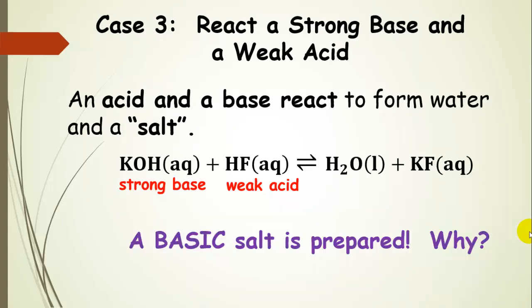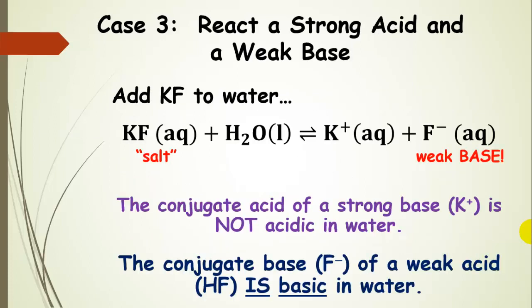What happens if we react a strong base with a weak acid? We still get water in our neutralization reaction, plus a salt — this time potassium fluoride — and this salt is basic. Adding potassium fluoride to water, it dissociates into potassium cations and fluoride anions. Fluoride is the conjugate base of a weak acid, so it is itself a weak base. The potassium cation — conjugate acid of a strong base — is not acidic in water. But the conjugate base of the weak acid hydrofluoric acid is basic in water, so fluoride anion does affect the pH.